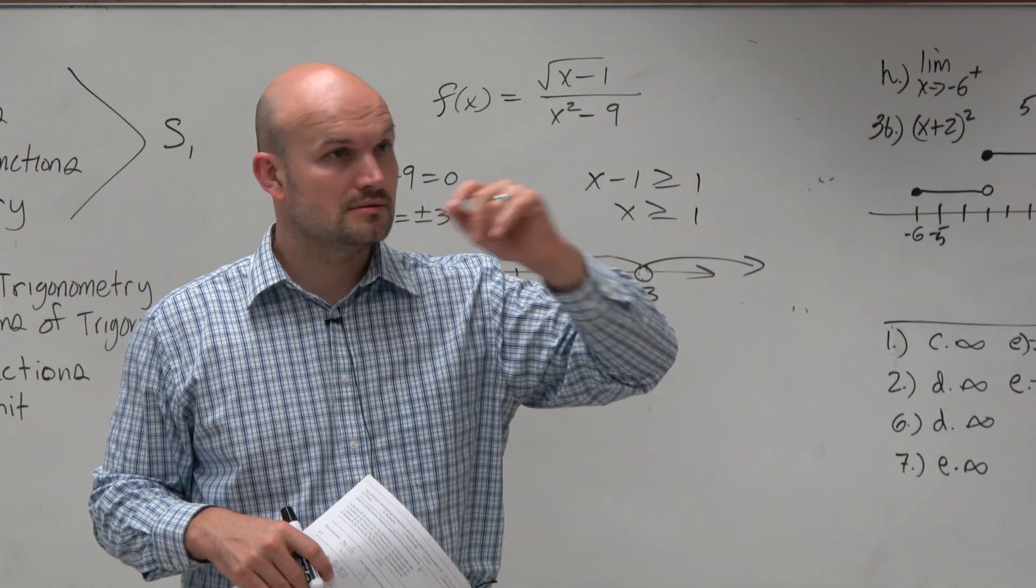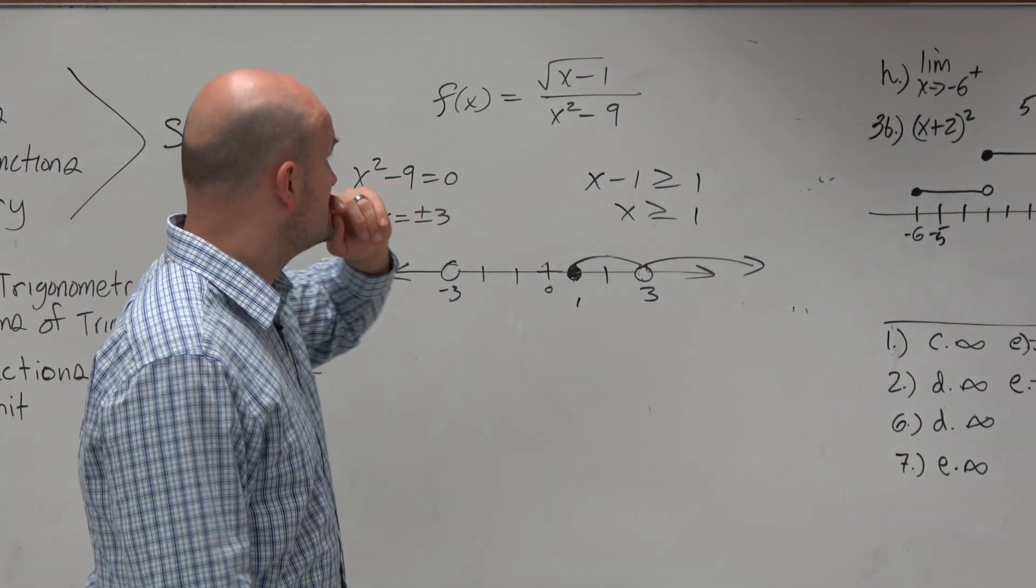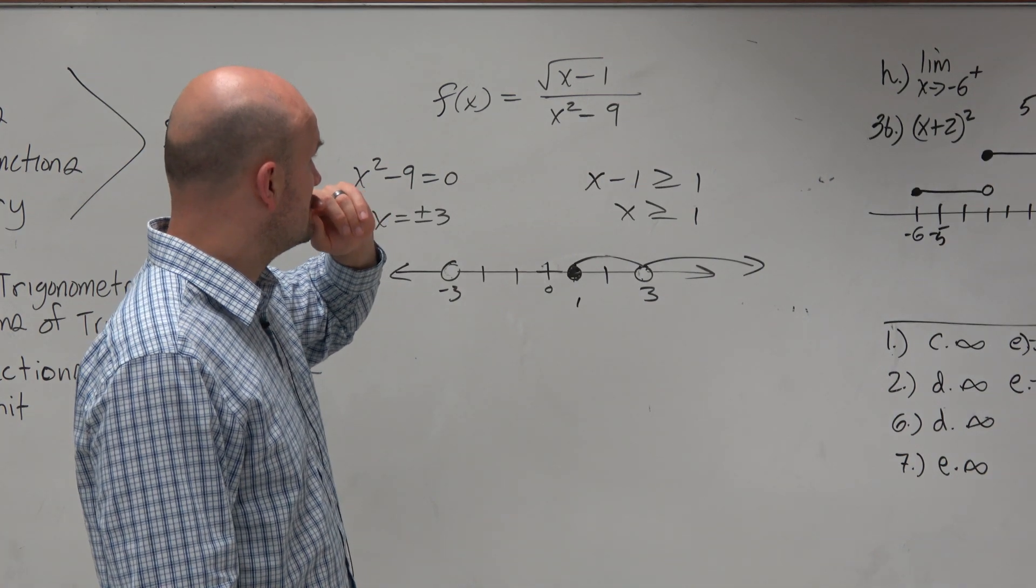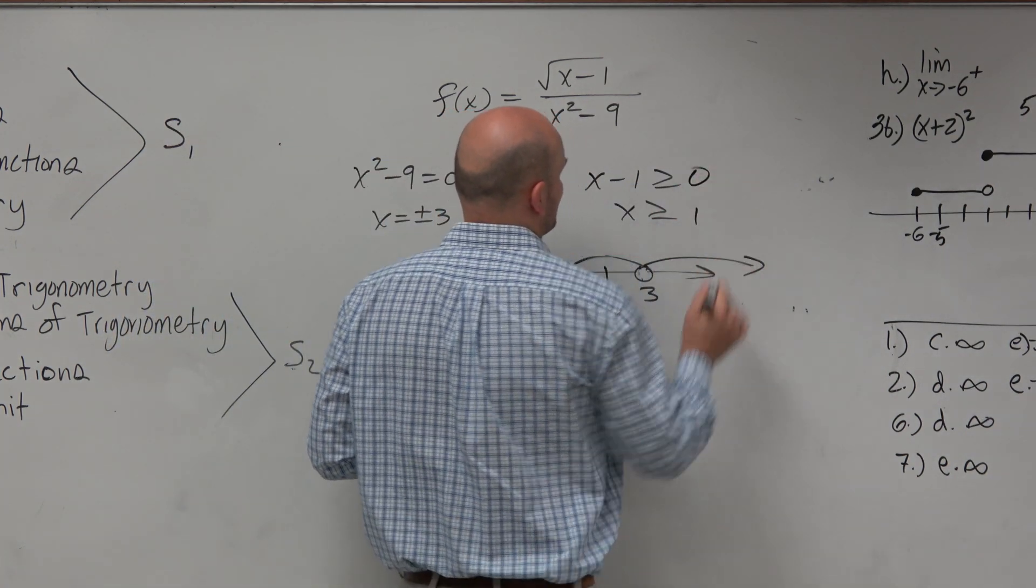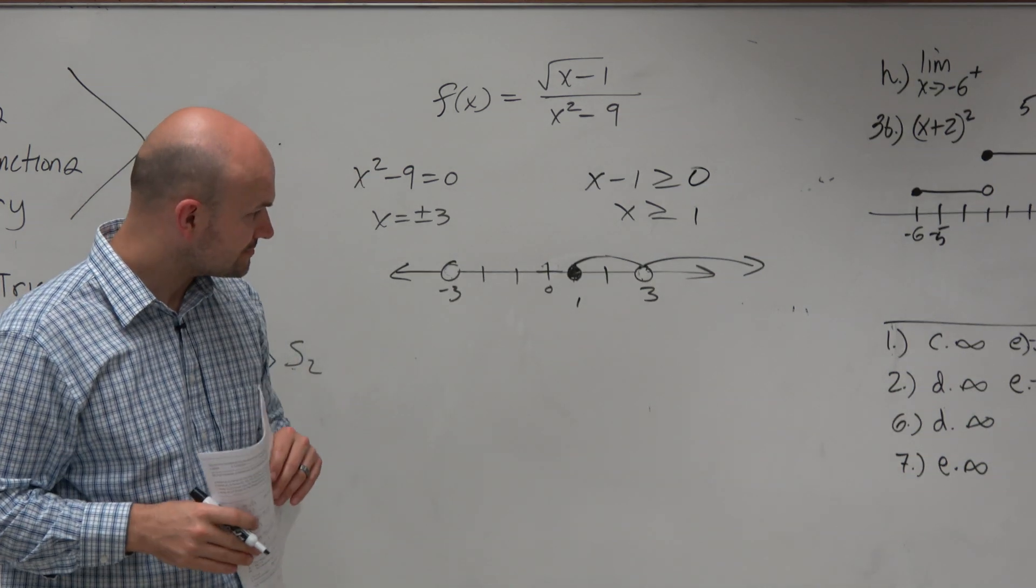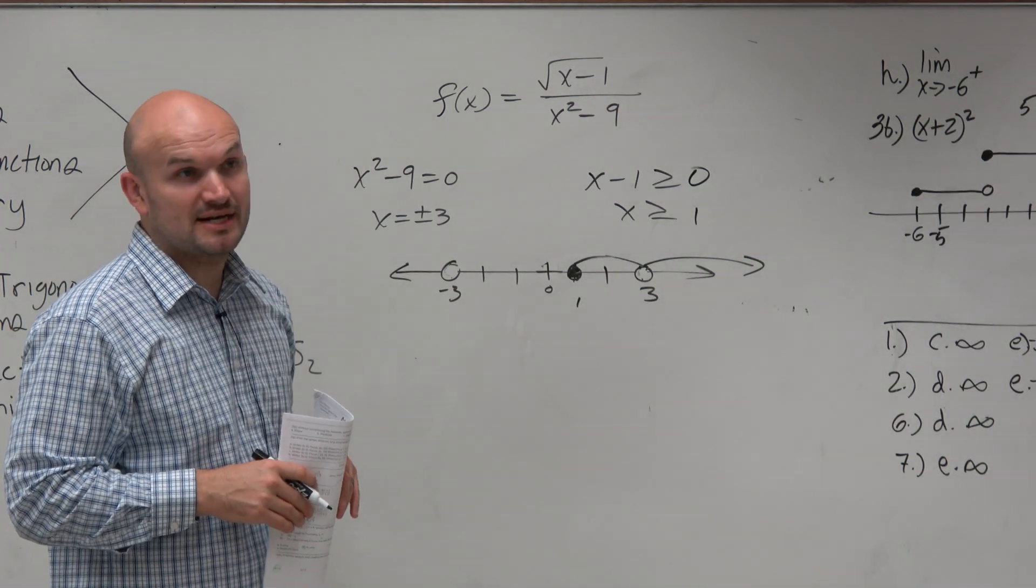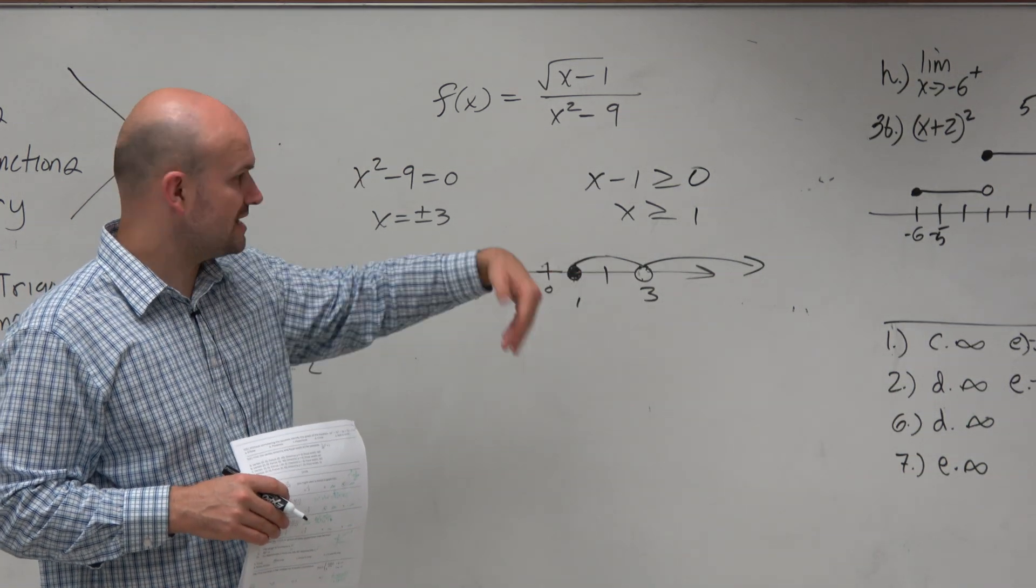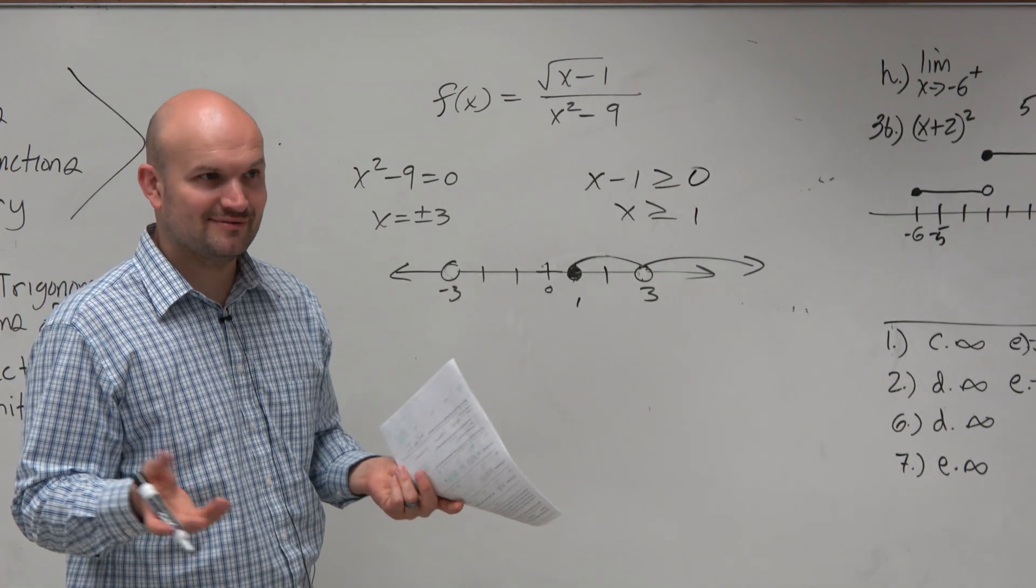Student asks: Should x minus 1 be greater than 0? Yes. So x minus 1 has to be greater than or equal to 0. Then you add 1 to the other side, so x has to be greater than or equal to 1. It's been a little rusty.